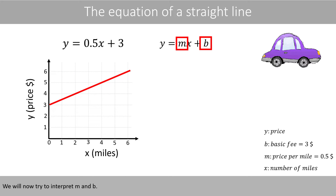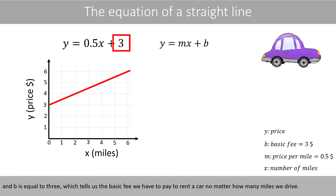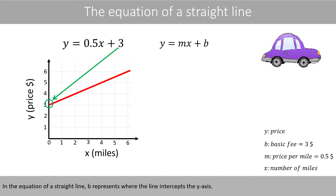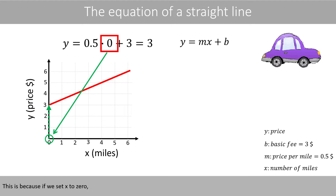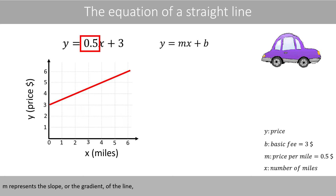We will now try to interpret M and B. M is usually called a coefficient because it is multiplied by X, whereas B is called a constant. In our example, M is equal to 0.5, which tells us the price per mile. And B is equal to 3, which tells us the basic fee we have to pay to rent a car no matter how many miles we drive. In the equation of a straight line, B represents where the line intercepts the Y axis. This is because if we set X to 0, Y is equal to 3, so the intercept of the line is equal to 3.